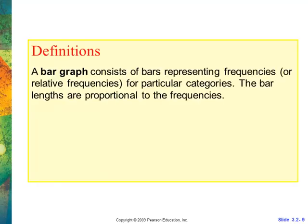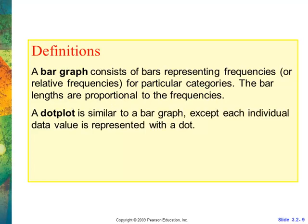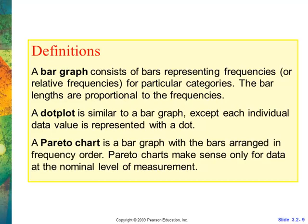A bar graph is a graph that is represented by bars. A dot plot is a bar graph where we use dots. And a Pareto chart is a bar graph where we have nominal data only that is put in from highest to lowest.